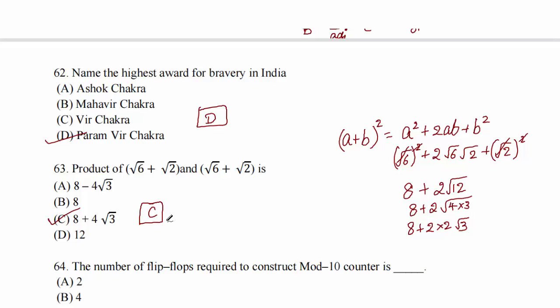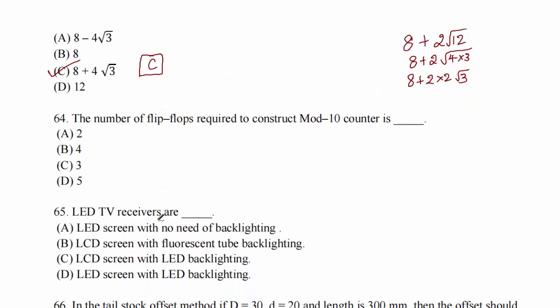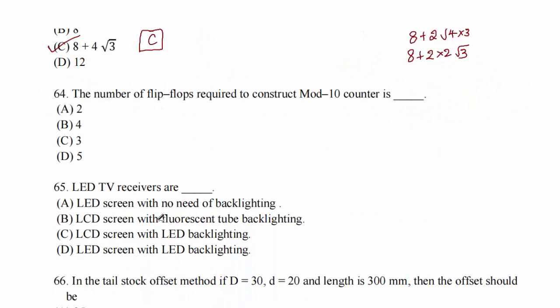Question 64: the number of flip flops required to construct mod 10 counter. To count from 0 to 9, 0 is 0000 in binary and 9 is 1001, so 4 bits are enough. Option B.